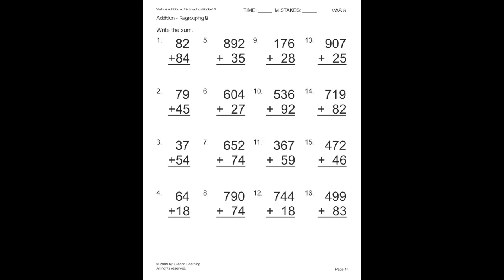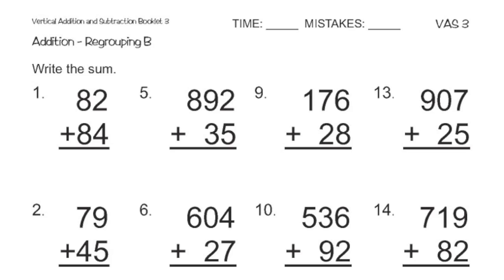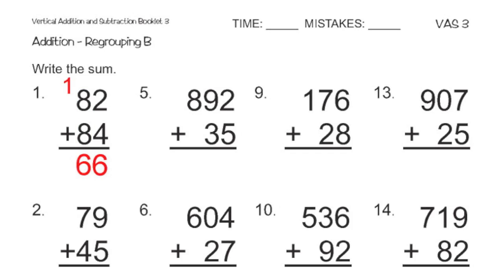Let's start with page 14: 82 plus 84. Adding the ones column: 2 plus 4 makes 6. I can't regroup that because it's less than 10. Moving to the tens column: 8 and 8 add up to 16. Put the 6 down below and carry 1 into the next column. There are no hundreds to start — it's basically like having 0 hundreds — but I still add 1 into the hundreds column. The only hundred we have is that carried 1, so I bring it down. My final answer is 166.